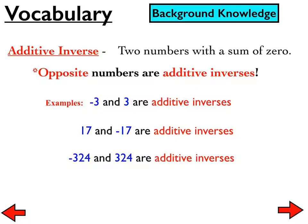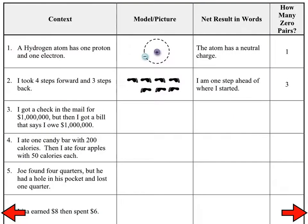The idea of the additive inverse leads us to a very important topic when we are adding or subtracting integers — the idea of something we call a zero pair. That's the first thing we're going to talk about today. Number one: a hydrogen atom has one proton and one electron. A proton has a positive charge, and an electron has a negative charge. When we have one positive charge and one negative charge, the atom has a neutral charge because it has one zero pair — a sum of zero.